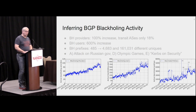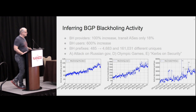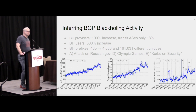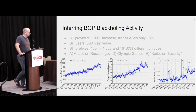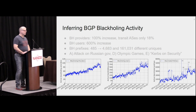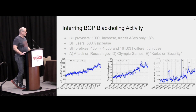The researchers took data from different collectors — both publicly available route service collectors and also from a large CDN. They found that the number of blackholing providers — those ISPs which offer customers the ability to blackhole prefixes — increased by 100%, while the number of transit ASes only increased by 80%. The number of blackhole users increased by 600%, and the number of prefixes increased by 10 times, from 485 to well over 4,500, with roughly 160,000 unique prefixes observed.